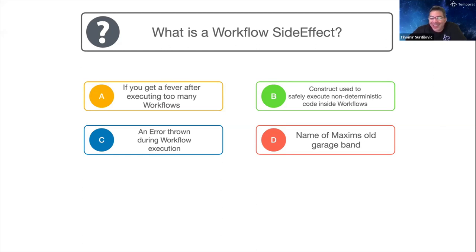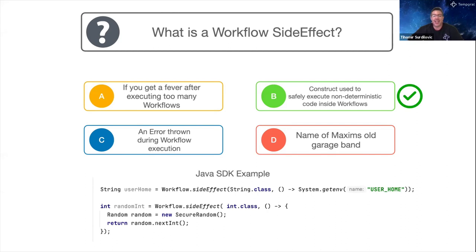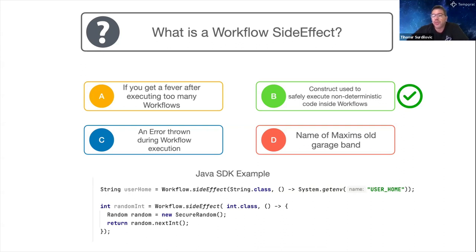Most people picked B - congratulations. A workflow side effect is a construct used to safely execute non-deterministic code inside workflows. In the Java SDK, we use workflow.sideEffect on the first line to get a system environment variable, and we can also use a side effect to get a random number in workflow code.